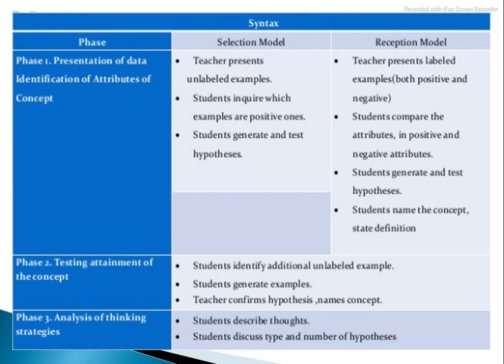In phase 2, testing attainment of the concept — you test students. Students identify additional unlabeled examples, then students generate examples, and the teacher confirms the hypothesis and names the concept. Phase 1 steps are different between the selection model and the reception model, but phases 2 and 3 are the same. In the selection model, the teacher gives unlabeled examples and students take a conclusion. In the reception model, the teacher gives labeled examples — positive and negative — and students compare them and generate and test hypotheses.